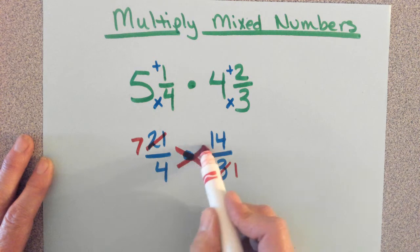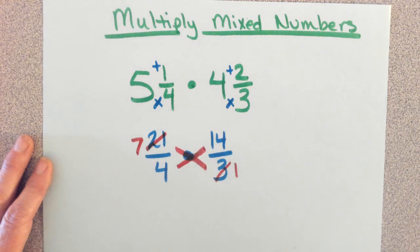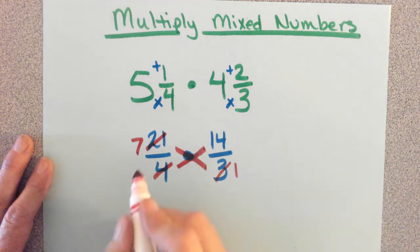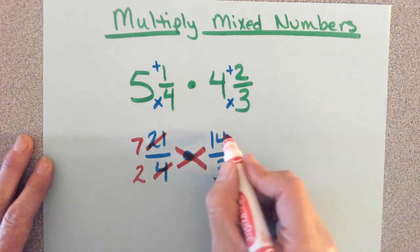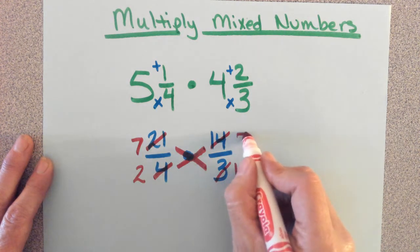Okay, now I'm looking at the fourteen and the four. They can both be divided by, what do y'all think? Two. Two, excellent. Four divided by two is two. What's fourteen divided by two? Seven. Seven, okay.